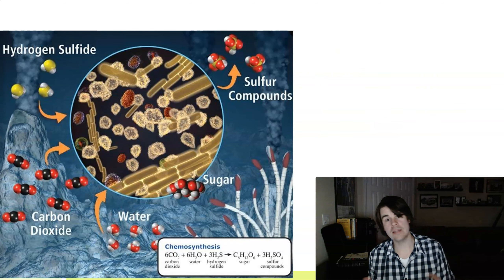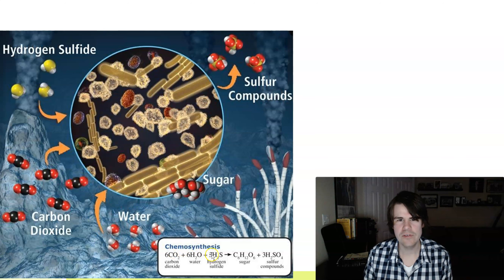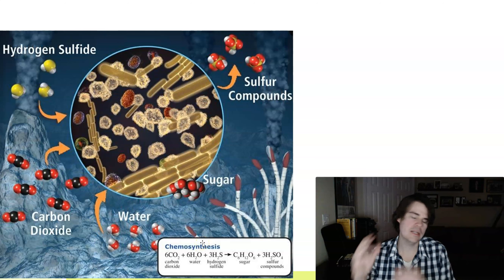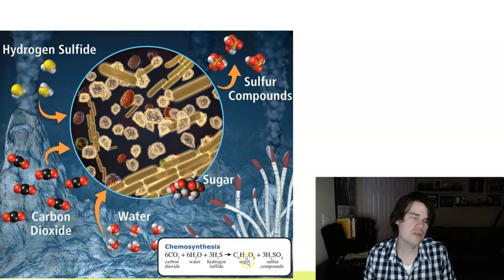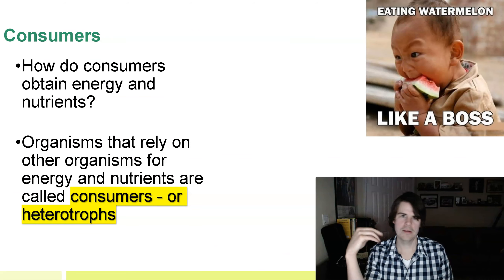I'll give you one answer right now: there's bacteria down there, and instead of using sunlight like cyanobacteria would, these bacteria use hydrogen sulfide. This is called chemosynthesis — synthesizing with chemicals. The chemical hydrogen sulfide allows the bacteria to have energy in order to build those sugars, those energy-rich compounds that are the foundation of the food web at hydrothermal vents.